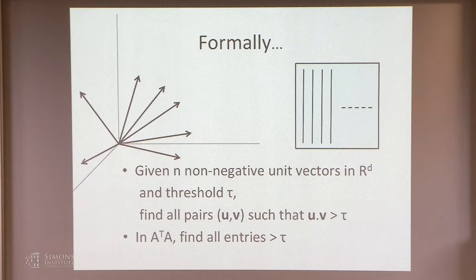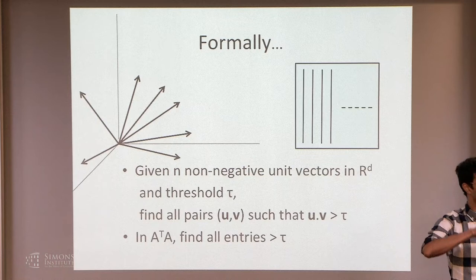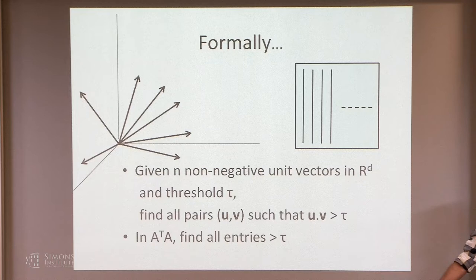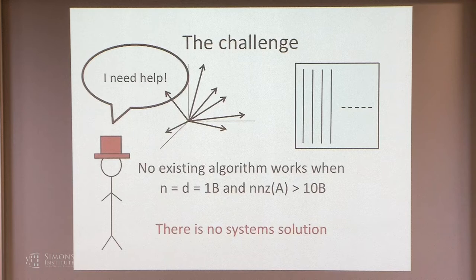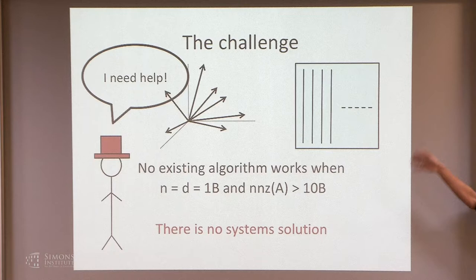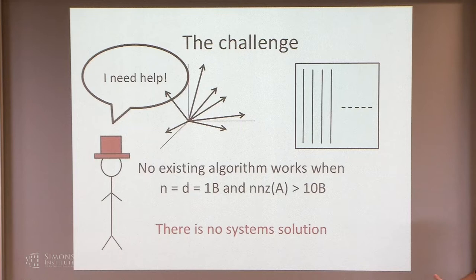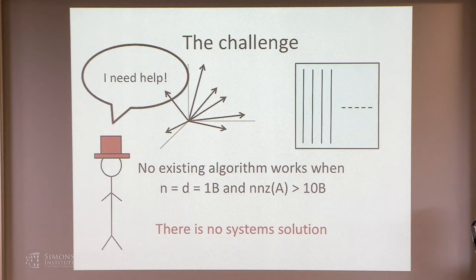This was an example where the applied person said: I have no algorithm and no system that works at scale. Specifically, when n and d are about a billion — that's the number of vectors and the dimension of the space — and the number of non-zeros in the matrix is about more than 10 billion. The data is sparse, with an average of about 100 non-zeros per column but with a lot of skew. At Twitter, there was no system solution. If you ask how many pairs are above threshold, it's on average about 10 to 100 per vector, so the total output might be 10 to 100 billion pairs.